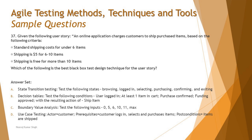Option A is state transition testing, which says: test the following states — browsing, logging in, selecting, purchasing, confirming and exiting. That could be a great option for the shopping experience, but this scenario doesn't talk about just shopping; it's talking about shipping and different charges for different quantities. So state transition testing does not apply here.